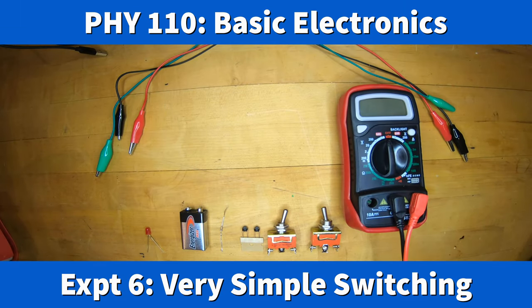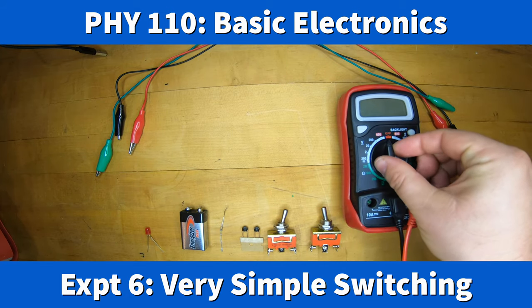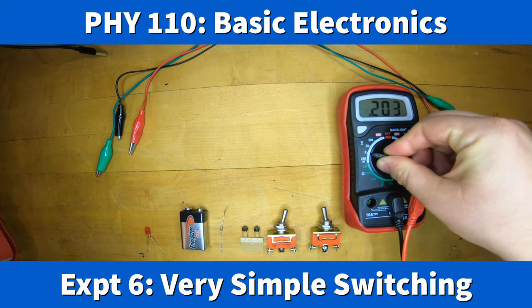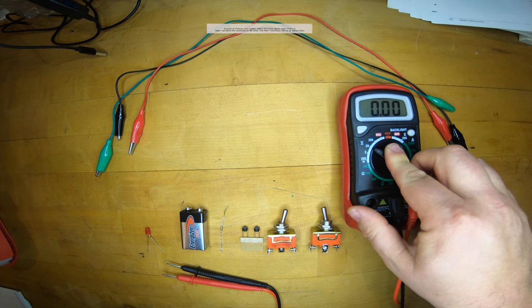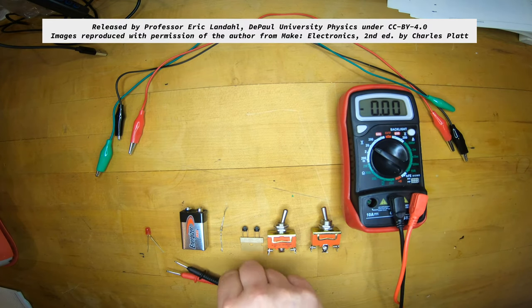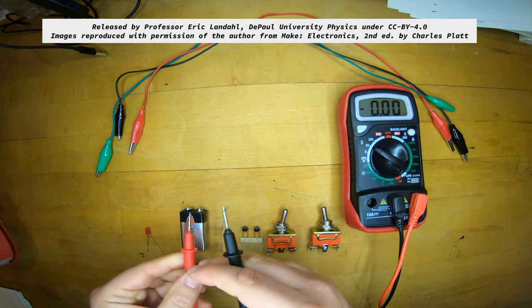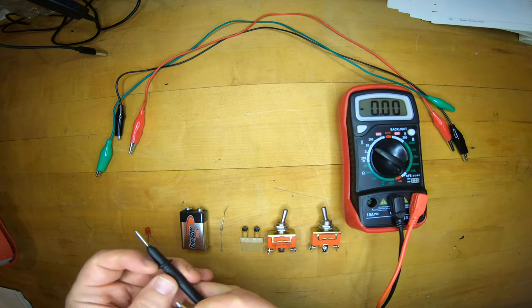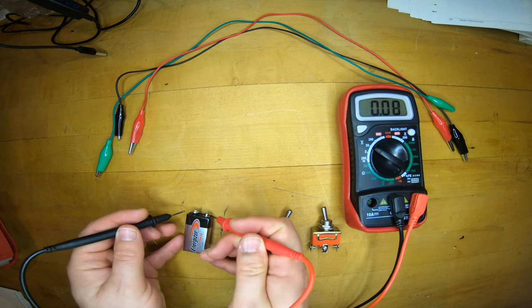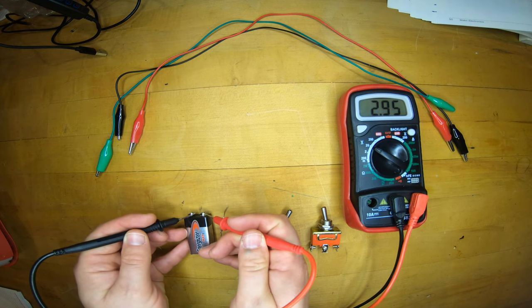This is Experiment 6, Very Simple Switching, from Charles Platt's Make Electronics 2nd Edition. It's also the first experiment of Chapter 2. We're going to be investigating toggle switches. Those are the red switches in my case, they might be a different color in your kit, and how they can be used to turn on and off lights.